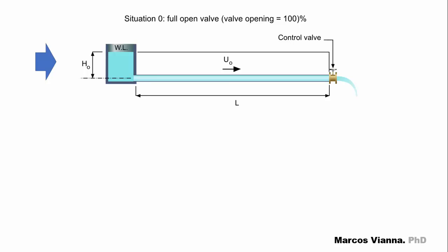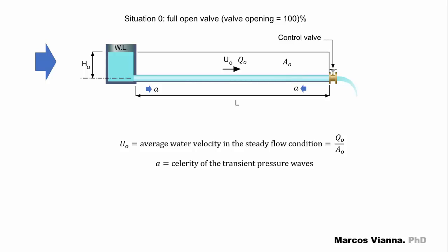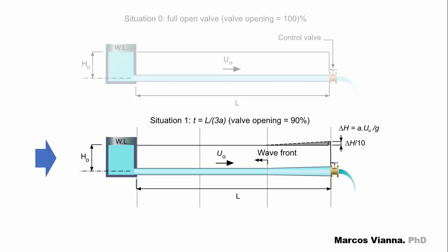Here we can see the water flowing in steady state. U0 is the average water velocity in its steady flow condition, and A is the celerity of the transient pressure waves. Now let's figure out what happens when we close the valve more slowly. We'll assume that the average velocity varies linearly with time. L over 3A seconds after the beginning of the closure operation, the wave front travels L over 3 from the valve to the reservoir. Let's assume that the valve opening is now 90% — 80%. This will be the configuration of the piezometric line along the pipeline.